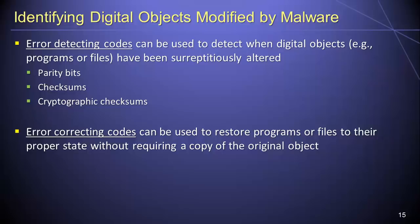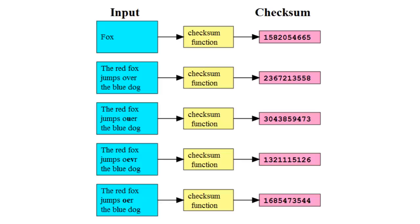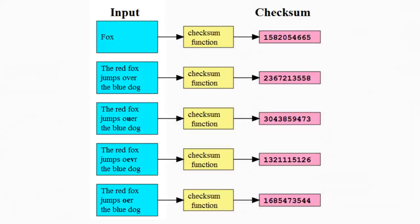A parity bit, or check bit, is the simplest form of error-detecting code. The process involves appending a single bit of data — either a zero or a one — to a string of binary data in order to indicate whether the number of ones in the string is even or odd. If the binary data in the string has been altered, there is a 50% chance that the parity bit will detect the modification. A checksum is a value computed by running a file through a hash function or checksum algorithm, and the integrity of a file can be verified by computing its checksum and comparing the result to a known checksum value; if the two values differ, we can be reasonably sure the file has been modified.